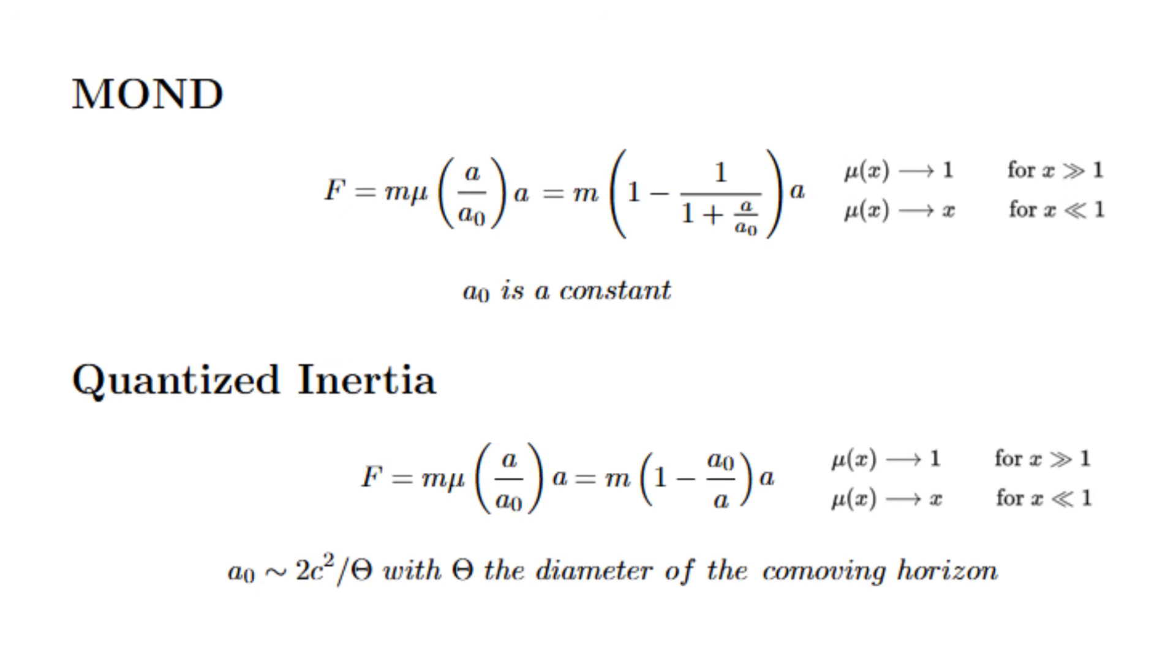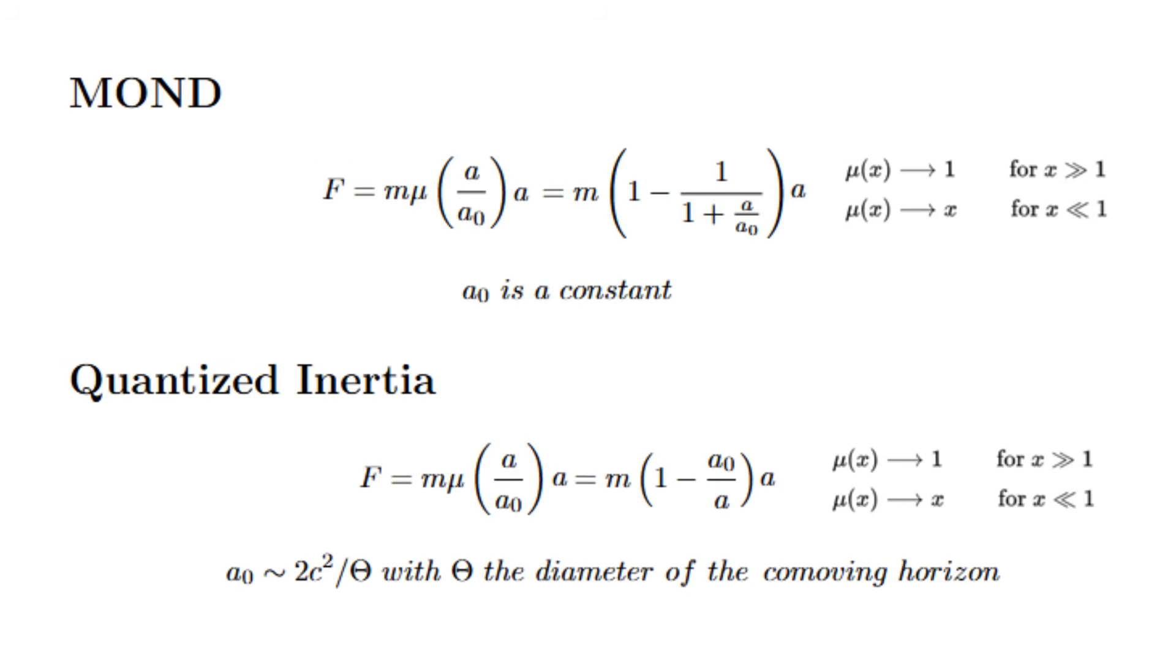The interpolating functions in MOND and Quantized Inertia are not exactly the same, but behave very similarly. Here A is the true measured acceleration, for instance of a star around the galaxy, and A0 is the acceleration scale.